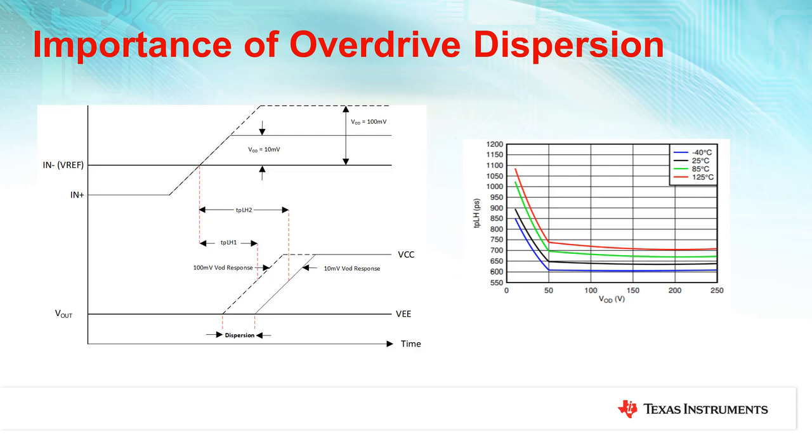There is not a simple solution to be able to de-skew the different propagation delay times according to different input overdrives, so it is important to select a comparator with very small input overdrive dispersion so that the system can calculate an accurate distance to an object, regardless of the amplitude of the reflected pulse.